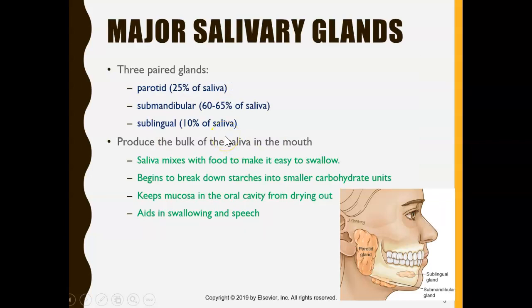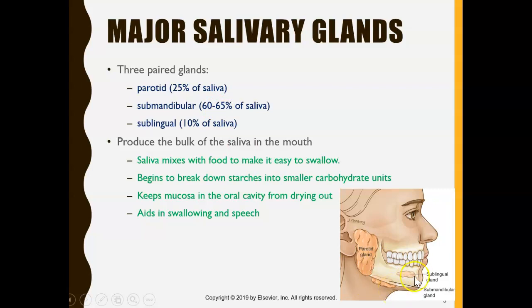These three glands release specific percentages of saliva. The parotid gland, despite being large, only releases 25% of our saliva. It's actually the submandibular gland that releases the bulk — 60 to 65% of our saliva. The sublingual gland is smaller and releases only 10%. So the salivary gland that releases the most saliva is the submandibular gland at 60 to 65%.